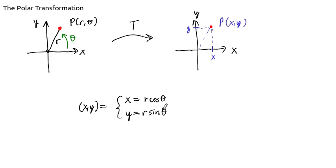This just comes from basic trigonometry. Because remember, this point P lies on a circle centered at the origin whose radius is r. Okay, so this is our polar transformation.